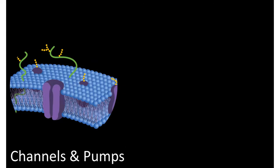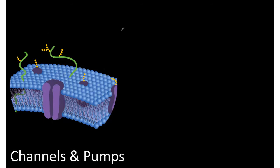Channels and pumps differ from transporter proteins in that when open, they have an open column running from extracellular to intracellular fluid — allowing free flow of ions, solute, and solvent. This is simple diffusion, so we do not call this a facilitated channel. Some channels are gated — they have a gate that stays closed, maintaining a steady state of disequilibrium on either side as a normal condition.